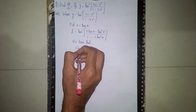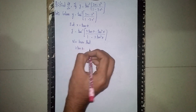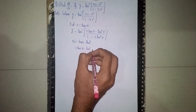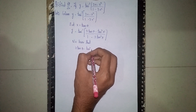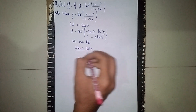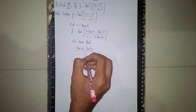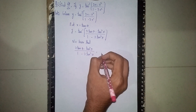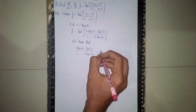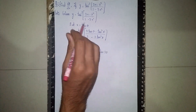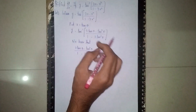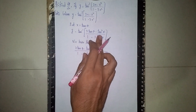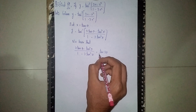We know that (3 tan theta minus tan cubed theta) by (1 minus 3 tan squared theta) is equal to tan 3 theta. That's why I have taken x as tan theta — to make it in simple form. Instead of that expression, it will become tan 3 theta.